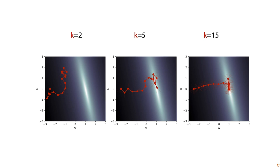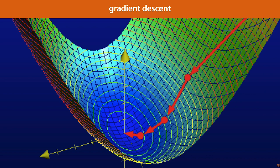In this case, we pay a steep price because we have to evaluate the function 15 times at every step to work out a better direction. But it turns out this is a price we don't have to pay, so long as we can look inside our model. If we can look at the function that defines our model, we can use calculus to work out, more or less free of charge, the direction in which the loss decreases the quickest. And if we then simply take small steps in that direction, we end up with an algorithm called gradient descent.